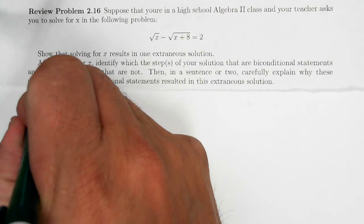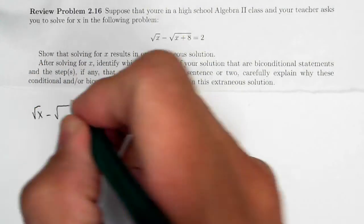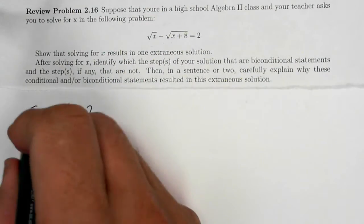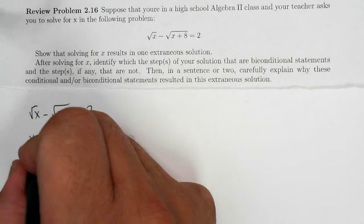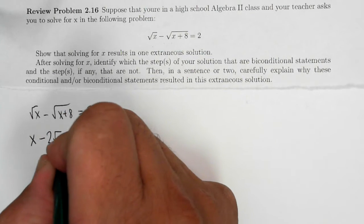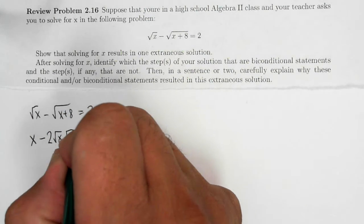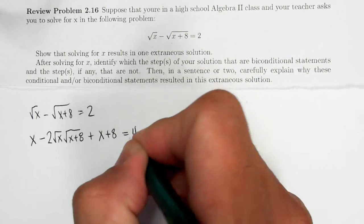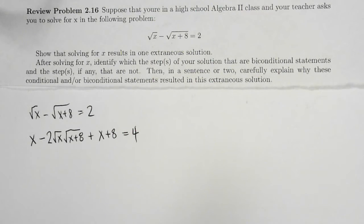So let me start with the original problem: square root of x minus square root of x plus 8 equals 2. Now if I square that I get the square of the first minus 2 times the first times the second plus the square of the second is equal to the square of the right hand side. So that's just squaring both sides.